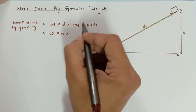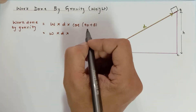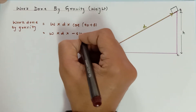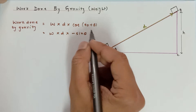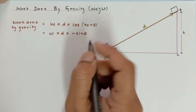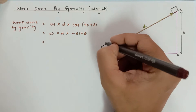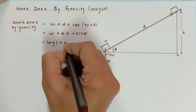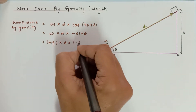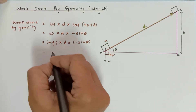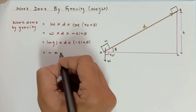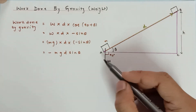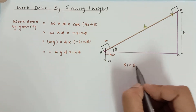Weight is W multiplied by d multiplied by cos(90 + theta). The angle 90 + theta falls into the second quadrant, where the cosine value is negative, and cos(90 + theta) equals minus sin(theta). Grade 10 and 11 students can follow this. If the mass of the block is m, then weight W equals mg, so the work done becomes mg × d × (−sin θ), which gives us −mgd sinθ.